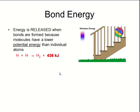When we form chemical bonds, energy is released because the molecules have a lower amount of potential energy than the individual atoms. The two hydrogen atoms seen in the potential energy diagrams on the previous slide had a higher amount of potential energy than a hydrogen molecule combined together.